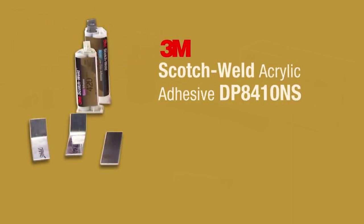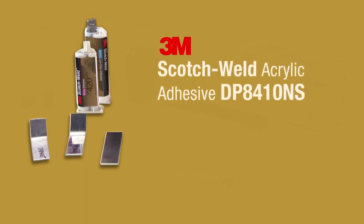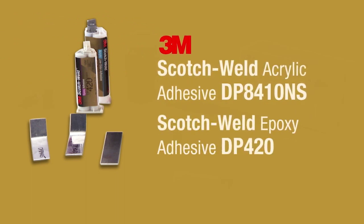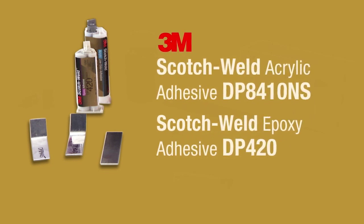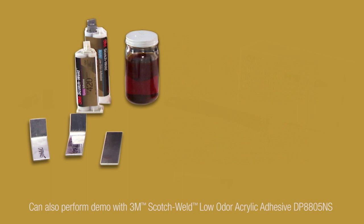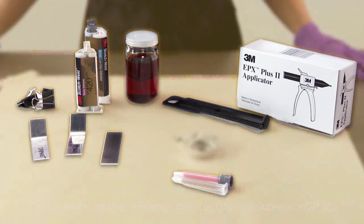For this, you'll need 3 pieces of aluminum from your demo kit, your 3M Scotch Weld Acrylic Adhesive DP8410NS, an epoxy adhesive like 3M Scotch Weld Epoxy Adhesive DP420, some light mineral oil or SAE30 motor oil, an EPX applicator and nozzles, and some clips from the demo kit.